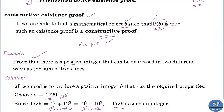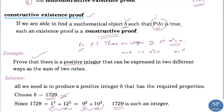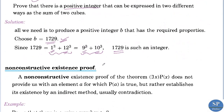One more example. We will prove that there are integers x such that x squared equals x. To prove this by the constructive existence method, we need to find an x equal to a such that x squared equals x. We can just take a equal to 1. We know 1 squared equals 1, so there exists an x — namely 1 — such that x squared equals x. This is proved.